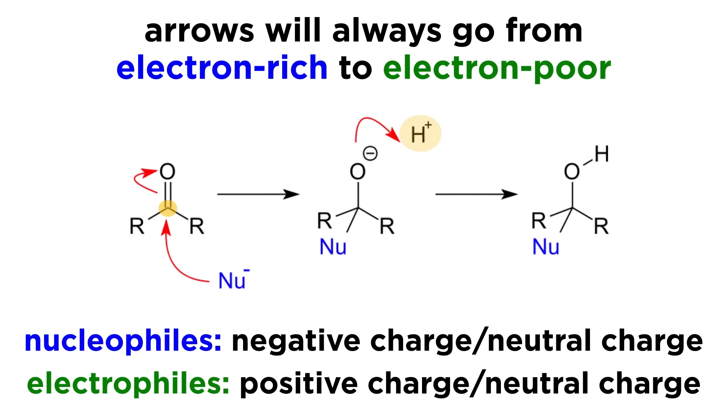Conversely, the electrophile can either have a positive charge or be of neutral charge. If it was positive, it will end up neutralized. If neutral, it will end up with a negative charge.